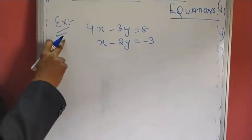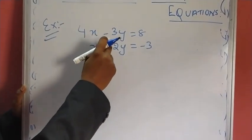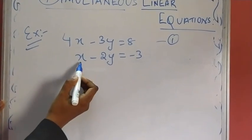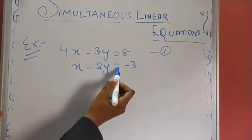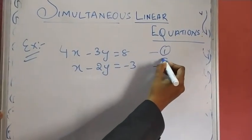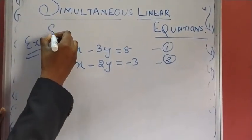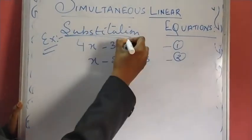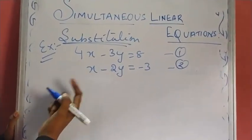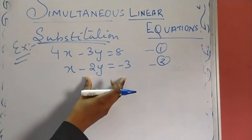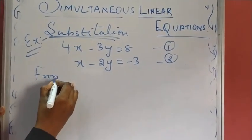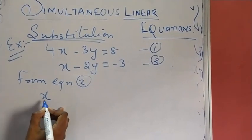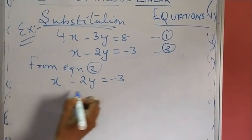Here is an example: 4X minus 3Y is equal to 8 — let us take this as the first equation — and the second equation is X minus 2Y is equal to minus 3. When following the substitution method, we are going to take any one of these two equations. Let us take the second equation, so from equation 2: X minus 2Y is equal to minus 3.